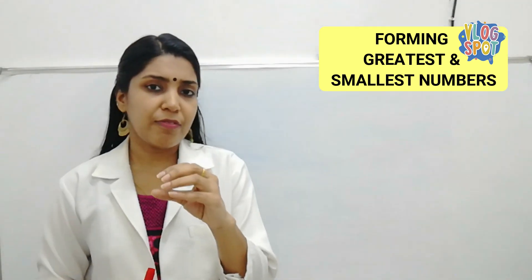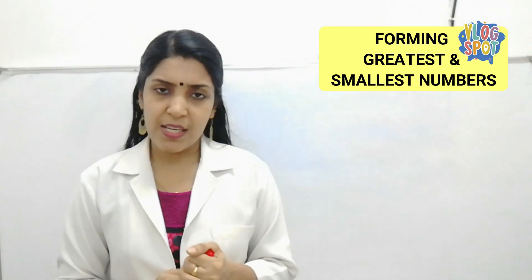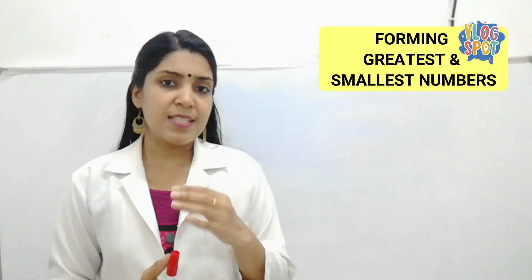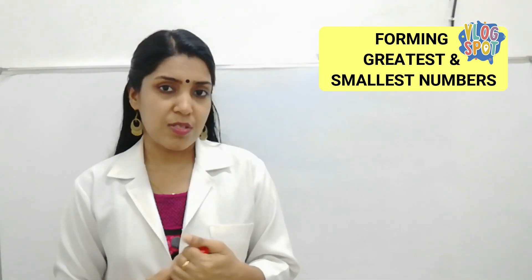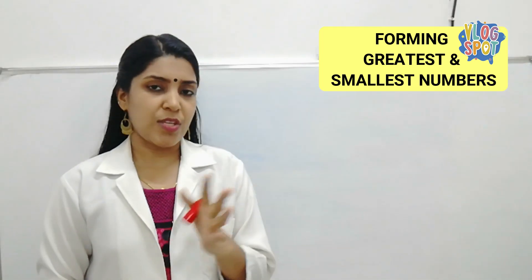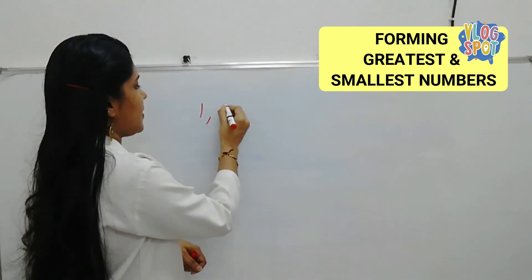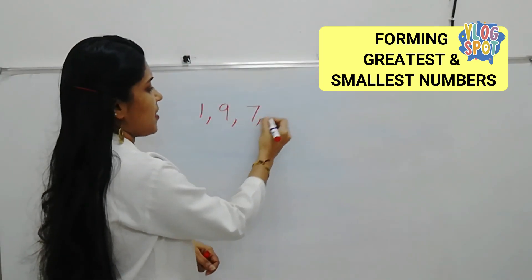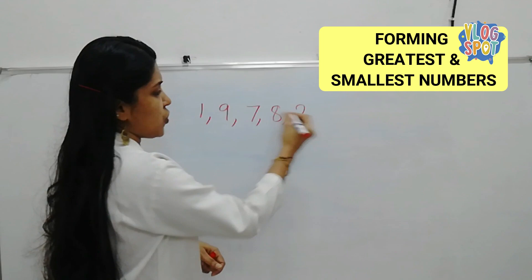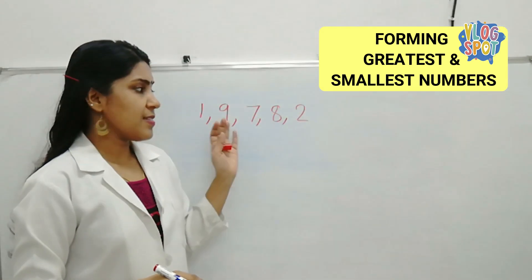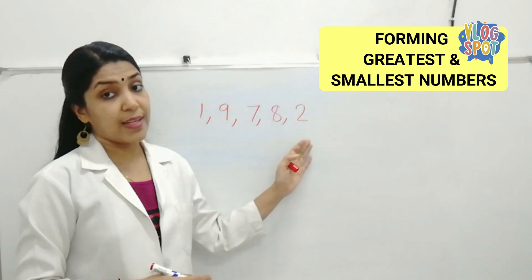Here I will give you a five-digit number. First, I will give you a very simple number. Then later, we will use some zeros. Now, without zero, only I am using the natural numbers. 1, 9, 7, 8, 2. These are the digits given.